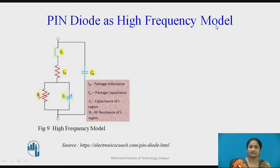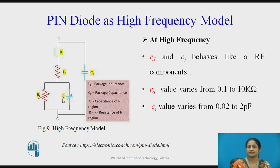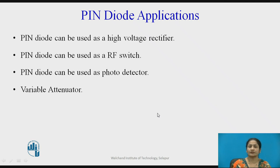At the high frequency model, the equivalent circuit is similar, with resistance and junction capacitance. At higher frequencies, R and C behave as RF components. The value of Rd varies from 0.1 to 100 kilohms and the capacitance value varies from 0.02 to 2 picofarads. The applications of PIN diodes include: high voltage rectifiers, RF switches, photo detector circuits, and variable attenuators.